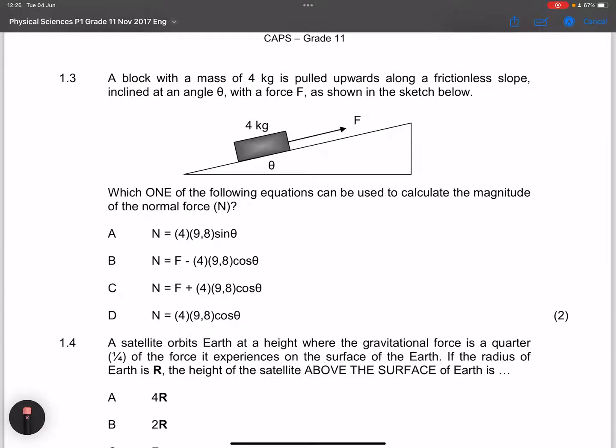Remember, on an inclined plane, a normal force would be equal to the perpendicular component of gravity. In this case, to get that component of gravity, we always say this is Mg times the cosine of the angle of elevation, which is theta in this case. So this is going to be mass times 9.8 times the cos of theta. So it looks like D will be our answer.